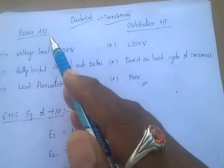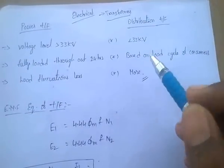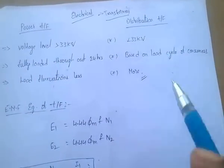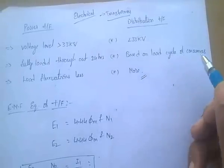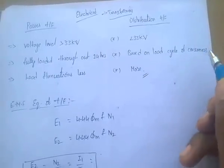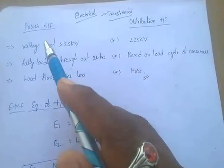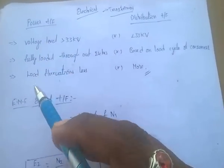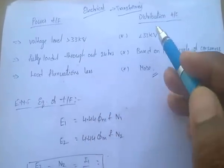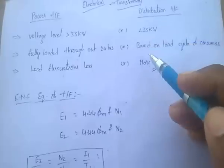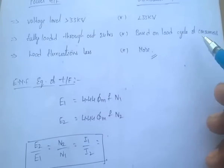Power transformers are fully loaded throughout 24 hours in a day. In the case of distribution transformers, loading is based on load cycles of consumers. In case of power transformers, load fluctuations are less, whereas in distribution transformers, load fluctuations are more.